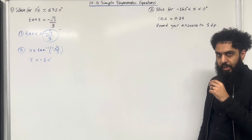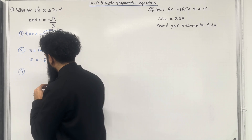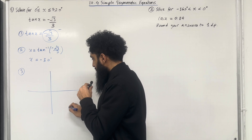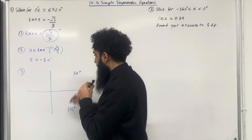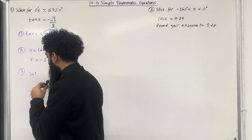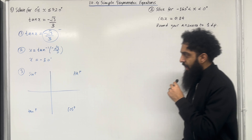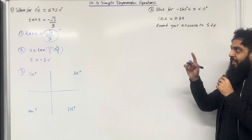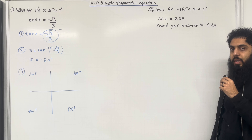Let's move on to step number 3. In step number 3, we have to draw a CAST diagram. In this quadrant, only cosine is positive. In this quadrant, all is positive. In this quadrant, only sine is positive. We are solving tan x equals minus square root 3 over 3, where x is more than or equal to 0 degrees but less than or equal to 720 degrees.